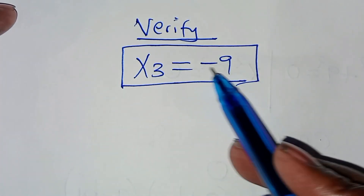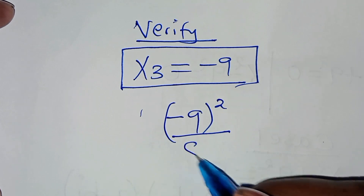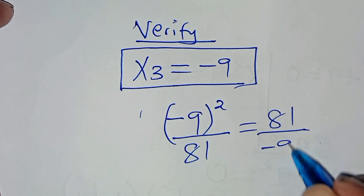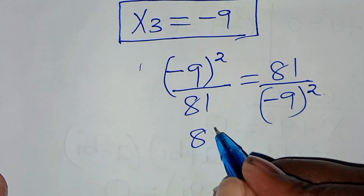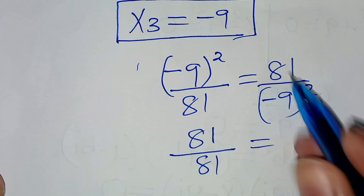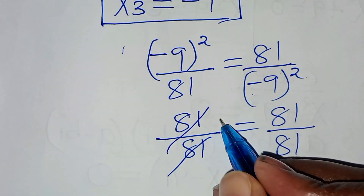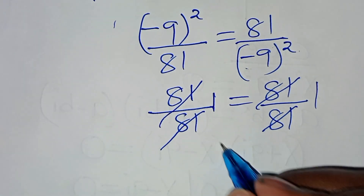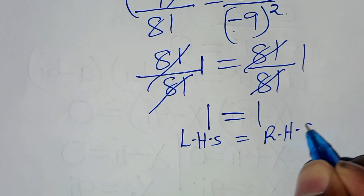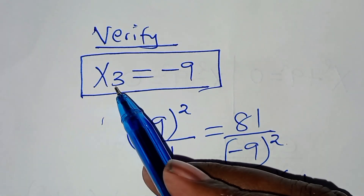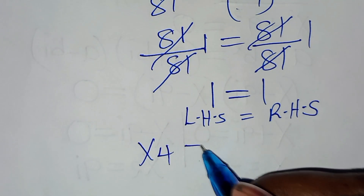Let's check x₃ = minus 9. We have (minus 9)² over 81, equal to 81 over (minus 9)². So 81 over 81 equals 81 over 81. Simplifying, 1 equals 1. The left hand side equals the right hand side, verifying that x₃ = minus 9 satisfies the equation.